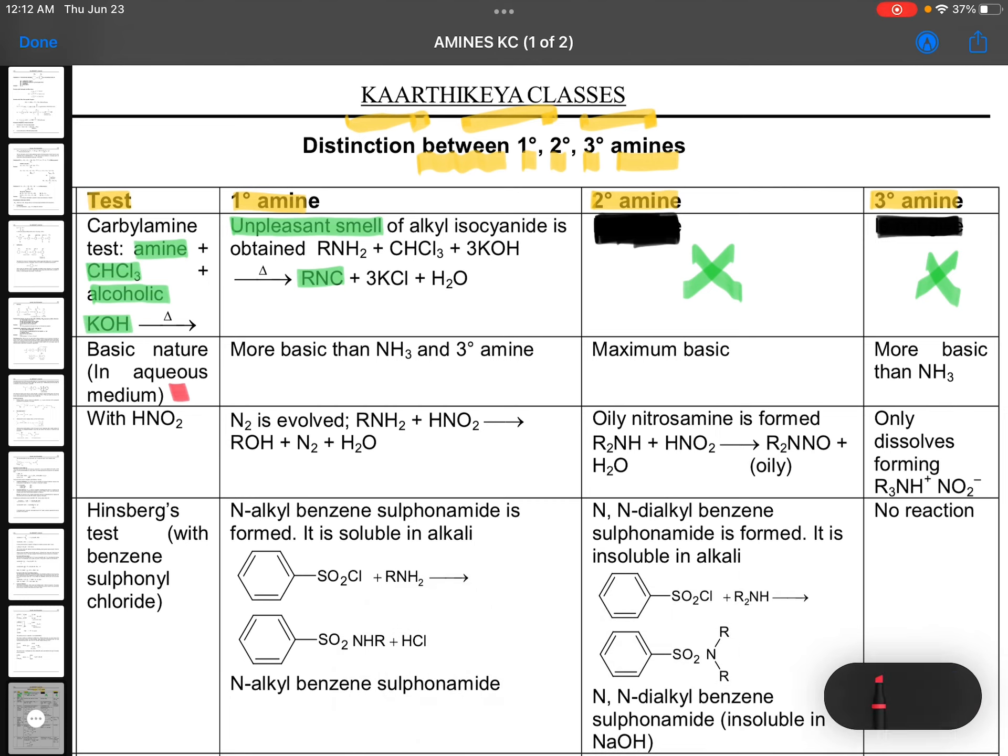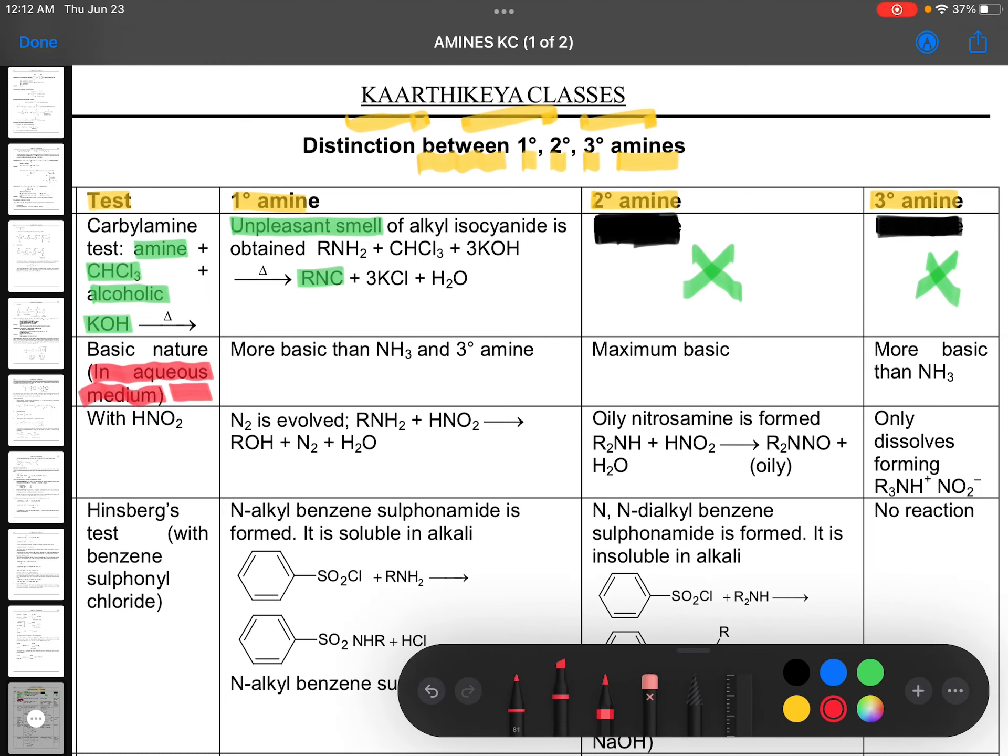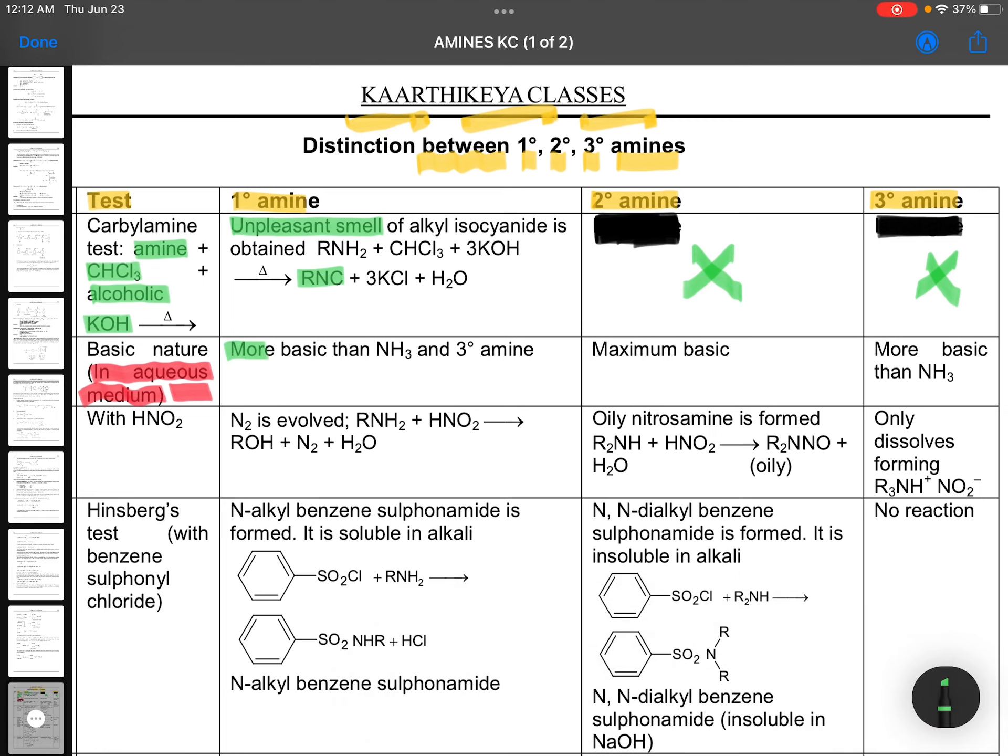Next, basic nature. In aqueous solutions, if you see the basic nature, how it is going to be. In this case, you can say more basic than ammonia and tertiary amine. Maximum basic is given for secondary amines. More basic than ammonia. So it all depends. The maximum is given for secondary. That's true.